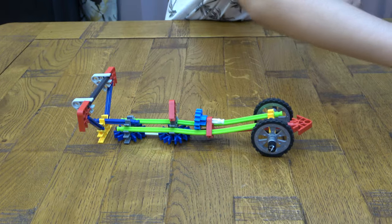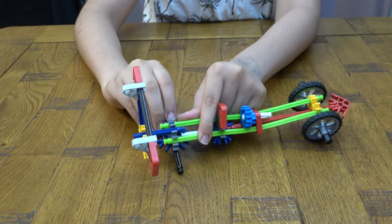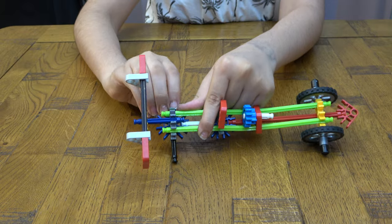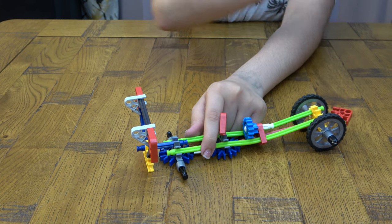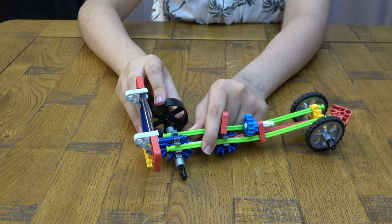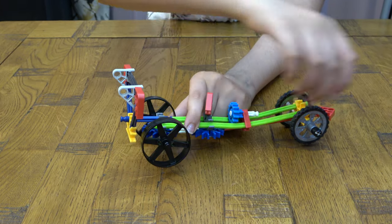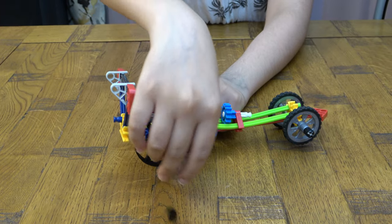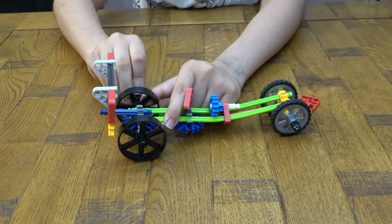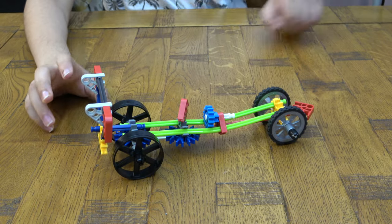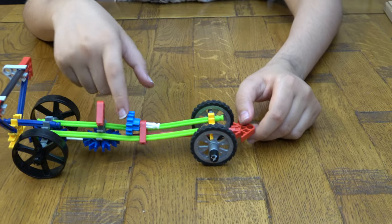And for the back wheels. So here it is. Here's the seat and the steering wheel.